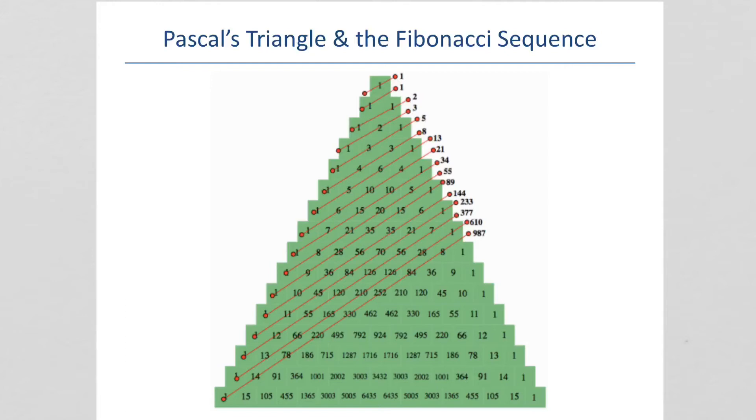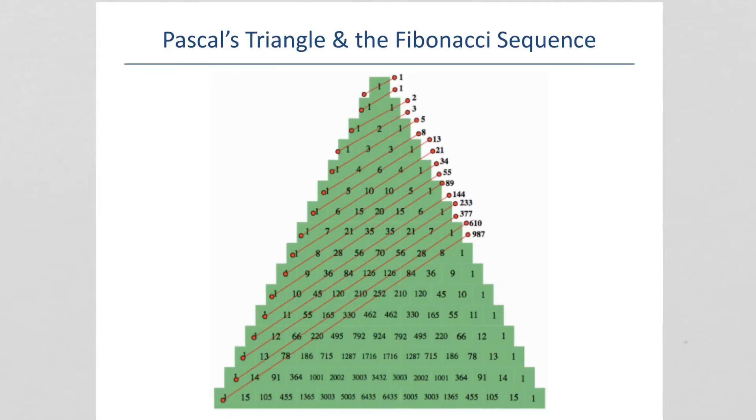In Pascal's Triangle, they take a 1 at the top, then another 1 and a 1. And then from there, all the way down is 1s. But in the middle, it's the previous row added, or the 2 directly above added. So, 1 plus 1 is 2.